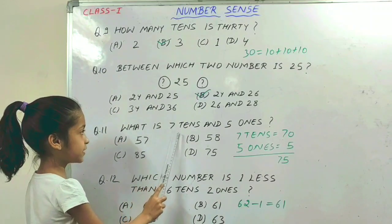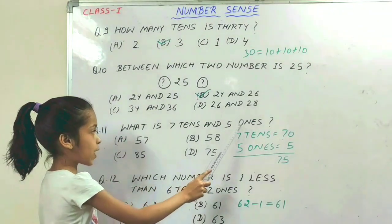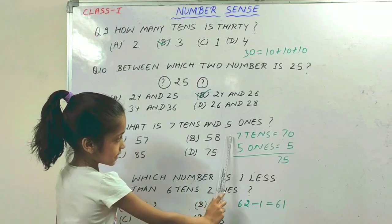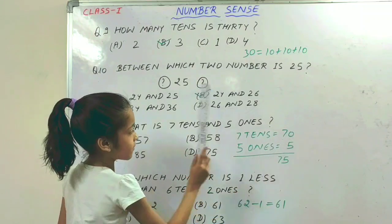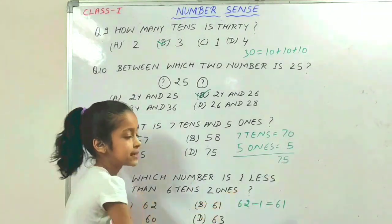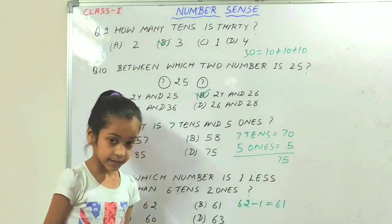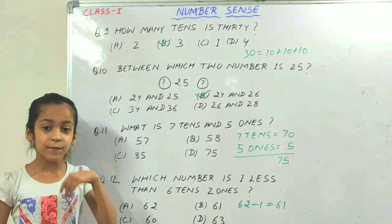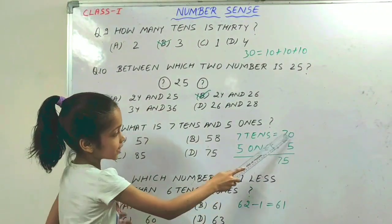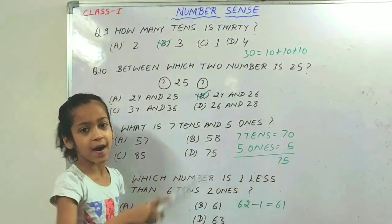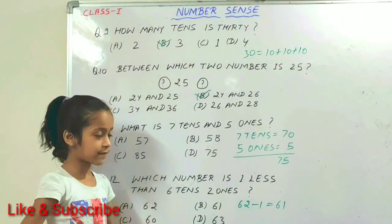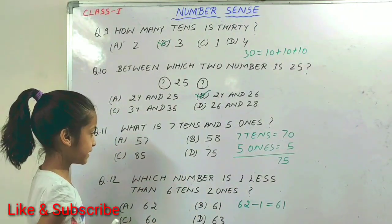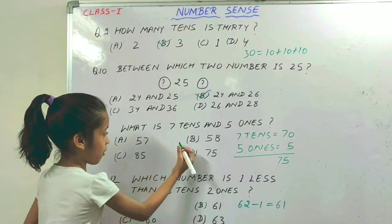The next question is: what is 7 tens and 5 ones? 7 tens means 70 and 5 ones means 5. If we add 70 and 5, the answer is 75. So option B is the correct option.